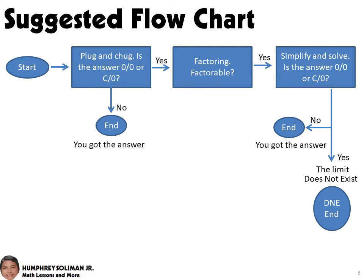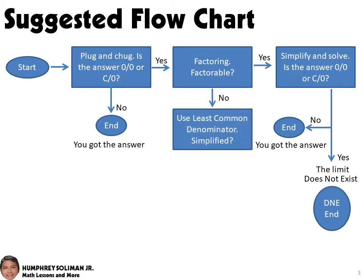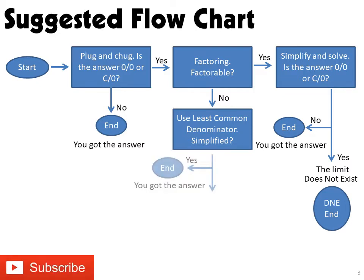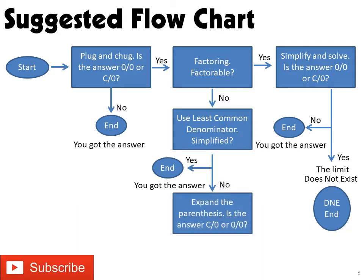Another option is to simplify using the LCD, or least common denominator, if plug and chug and factoring is not possible. We can simplify and solve the function after we combine the fractions together and cancel out the common factors. We might be able to solve the limit using plug and chug after simplifying. If the result is not a constant over 0 or a 0 over 0, that's already the answer.